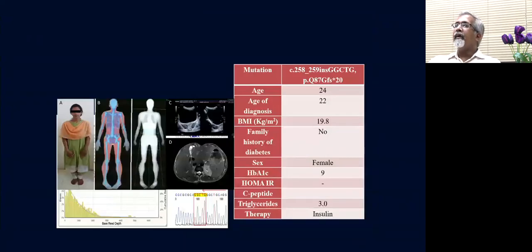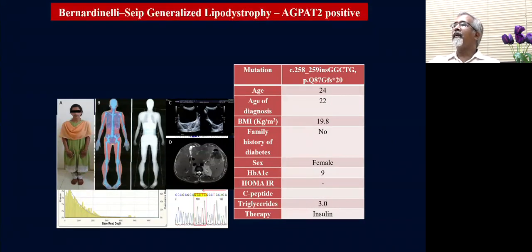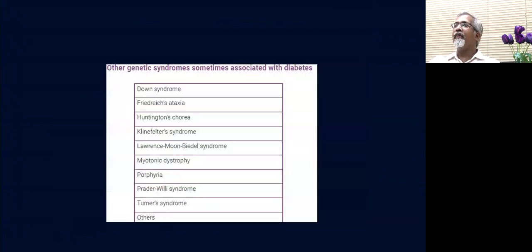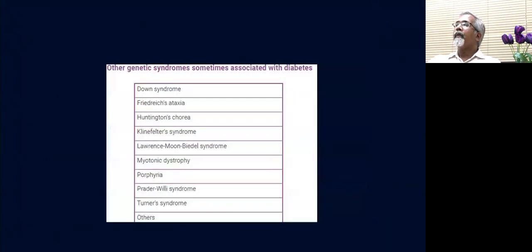Another young lady presented with stunting of growth and was extremely emaciated, with almost a total lack of subcutaneous fat. Mutation screening identified AGPAT2, showing evidence of generalized lipodystrophy, which is classical for the Berardinelli-Seip syndrome. Other genetic syndromes can also be screened with NGS and exome sequencing.